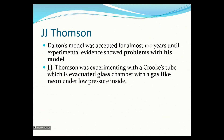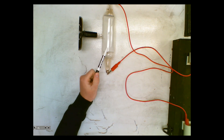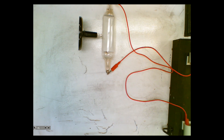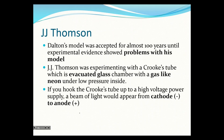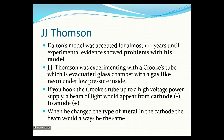The cathode ray tube was the hottest scientific toy in the 1900s — every scientist was playing with it. A Crookes tube is an evacuated glass chamber filled with a gas like neon, mercury, or hydrogen. In this tube they vacuum out all the air and fill it with a gas. To use a cathode ray tube you hook it up to a high voltage power supply and you get a beam of light. Thompson changed the type of metal in the cathode but the beam would always be the same.